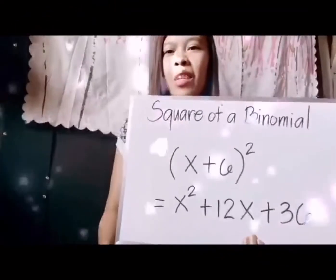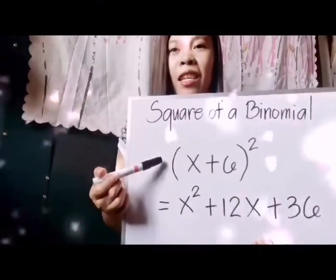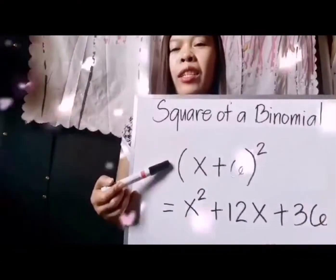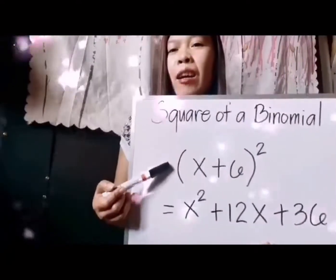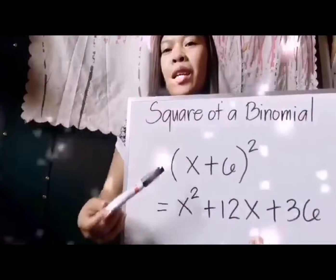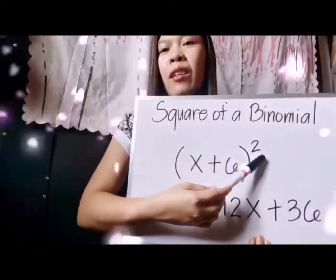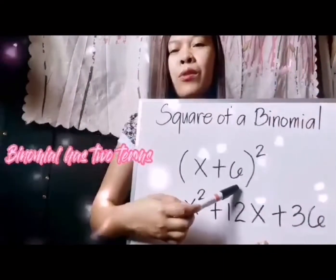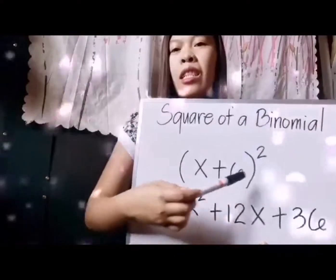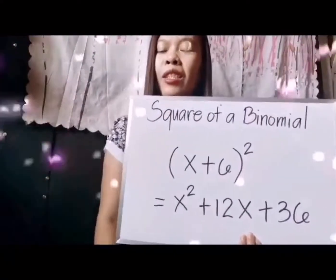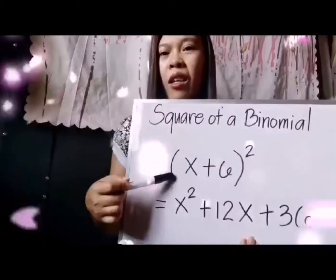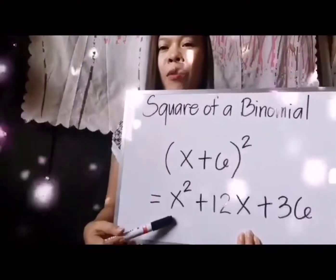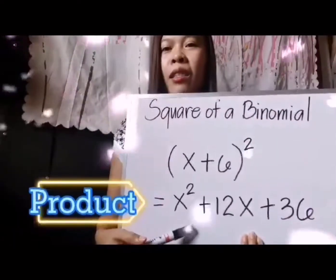Let's have our first example: the square of the quantity of x plus 6. This is how we identify if a given expression is an example of a square of a binomial — we have the binomial x plus 6, with two terms, and it is being squared. Our answer is x squared plus 12x plus 36.